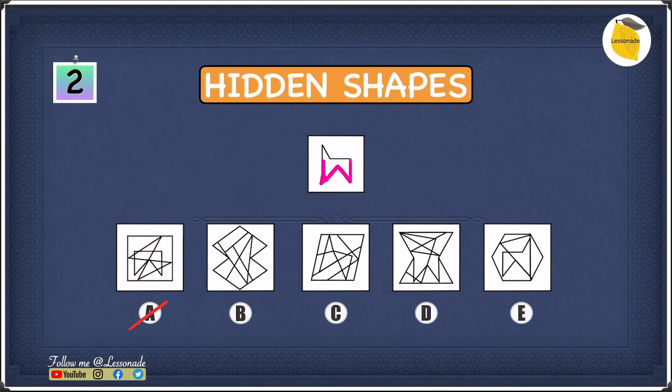So we're left with four options, let's move to B. In B we can't really find a W shape, so therefore we can go ahead and cross off B straight away.